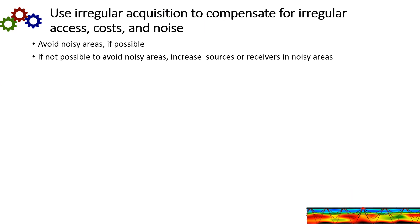So the noise is often very irregular in a seismic survey. And I claim it is predictable. Also in a seismic survey, access and costs are irregular. So I propose using irregular acquisition to compensate for the irregular access costs and noise. And we already do this to some degree. But one way is to certainly avoid noisy areas if possible. And if it's not possible to avoid noisy areas, increase the sources or receivers in those noisy areas.